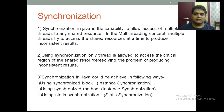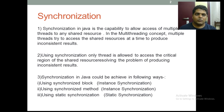Consider a scenario: you go for a movie and there is a single ticket window for availing tickets. What would happen if everyone tries to avail tickets all at once? It would create havoc and provide inconsistent results. Similarly, to maintain consistency, only one person is allowed to avail the ticket at a time. That's where synchronization is needed — only one thread is allowed to access the critical region of the shared resource, resolving the problem of inconsistent results.